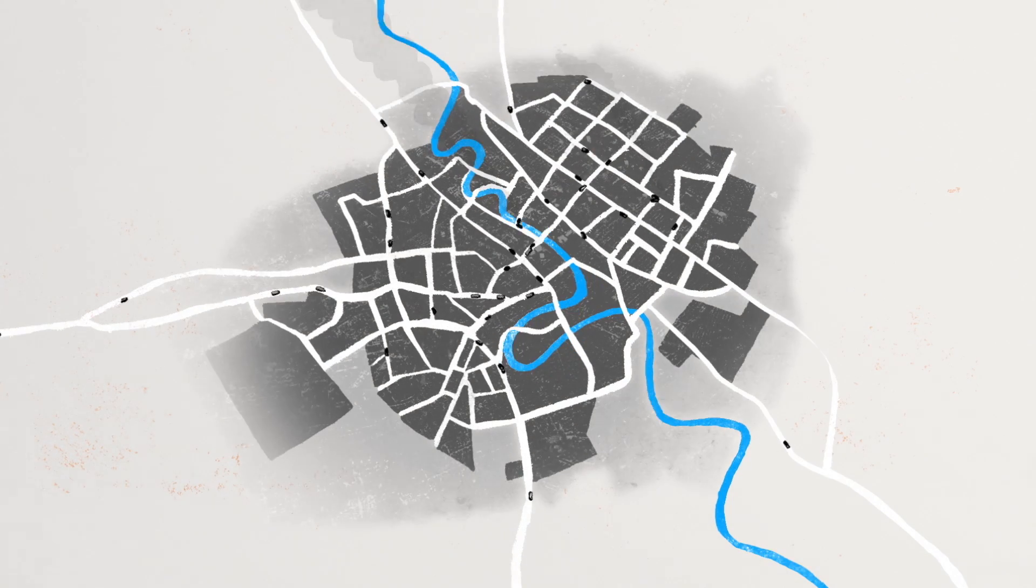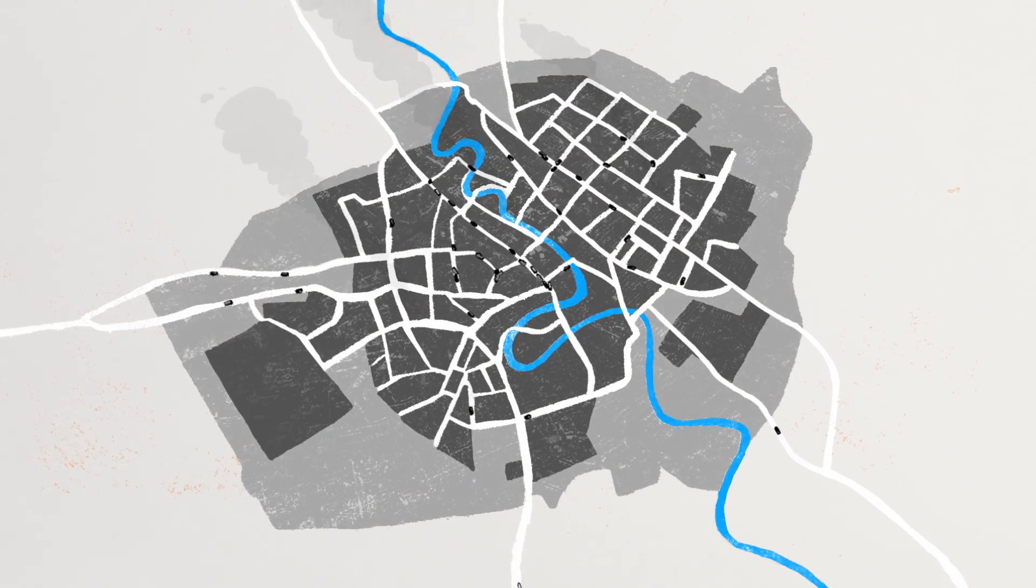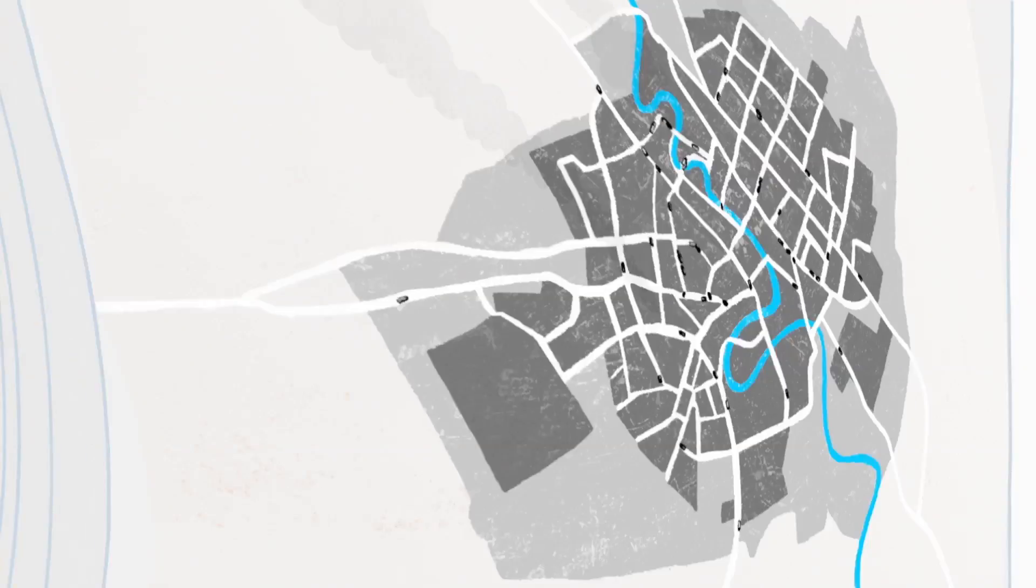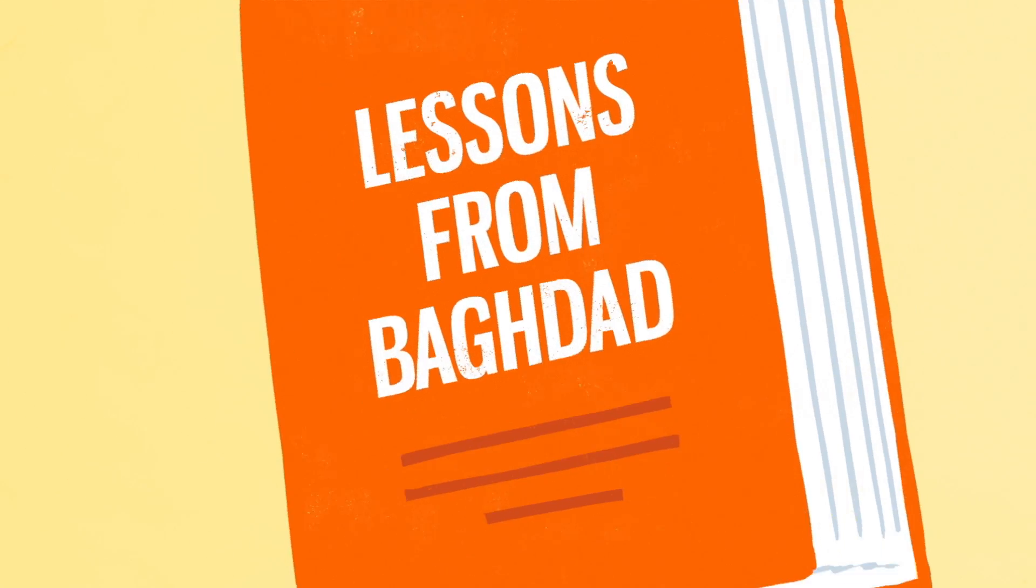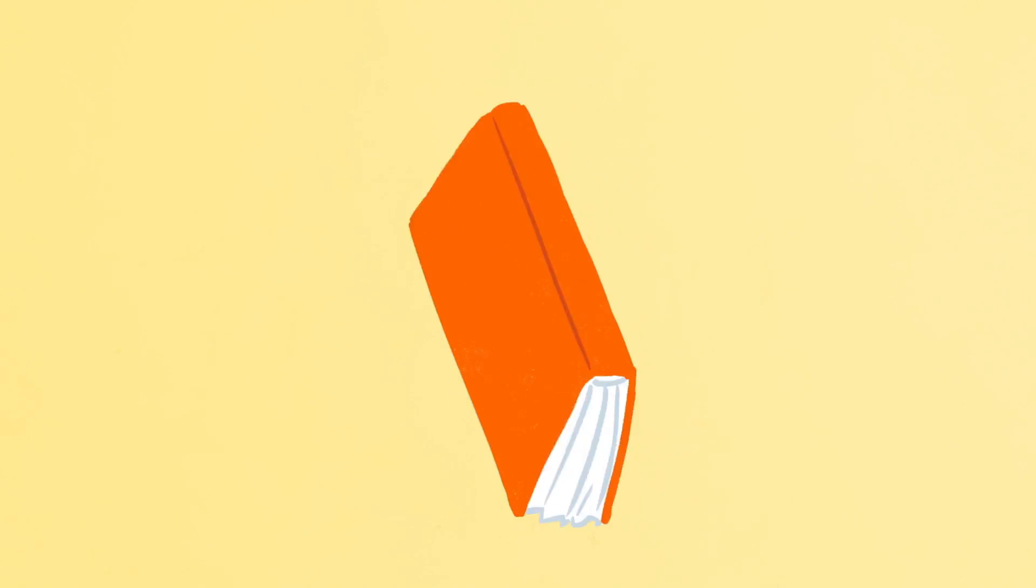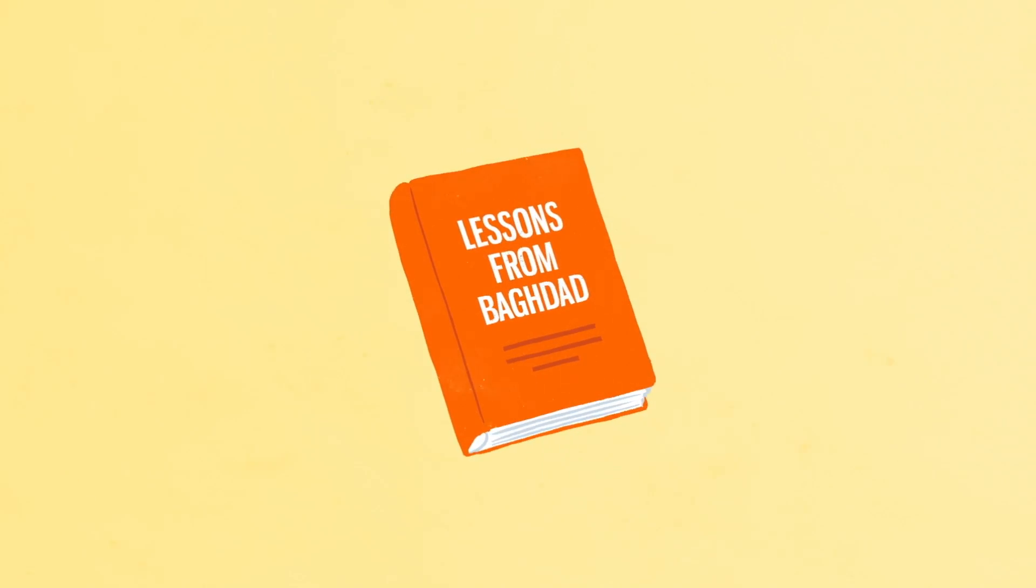There is a need to learn from previous urban interventions and work in ways that don't just adapt existing methodologies but embrace the complexity of the city. The Norwegian Refugee Council learned valuable lessons when they took a different approach in their urban program in Baghdad.